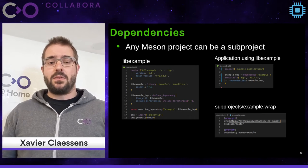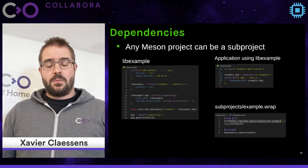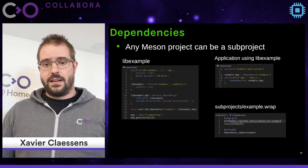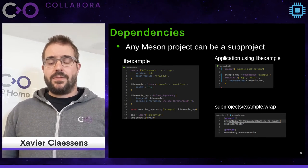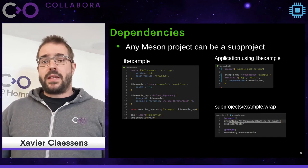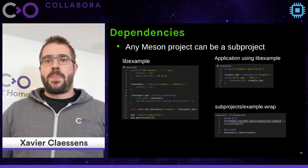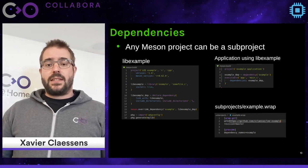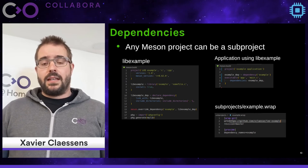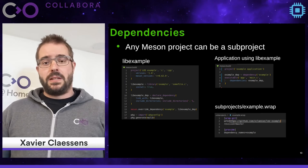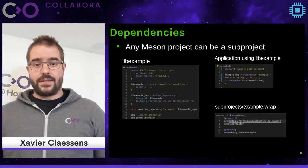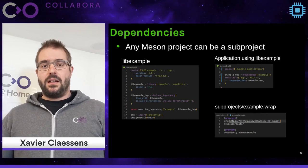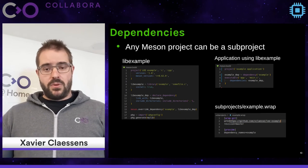Instead of looking up the dependency on the system, you can also generate a pkg-config file. It's really easy because Meson already knows the C flags needed to compile the library and all its dependencies, so it generates the file for you in a single line. Now that we have a declared library, we can use it as a dependency for an application. When you look up the example dependency it uses the overridden one, linking your executable with that dependency and building them together.